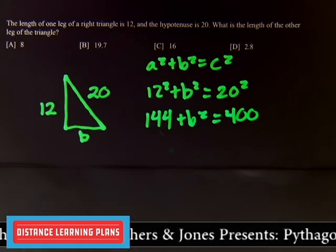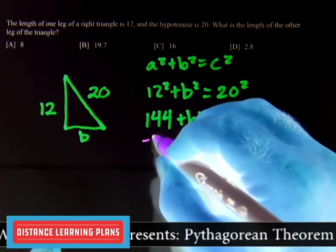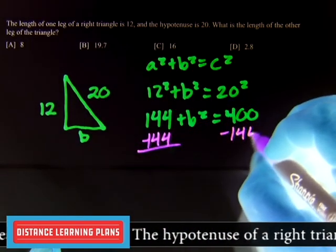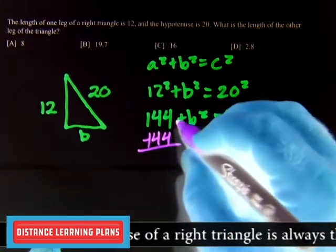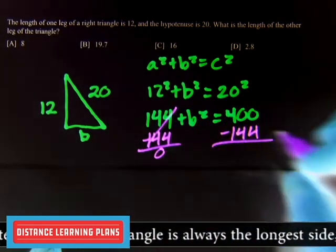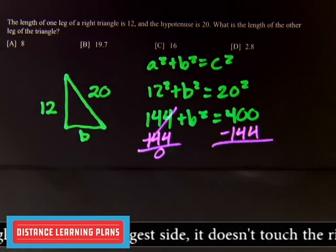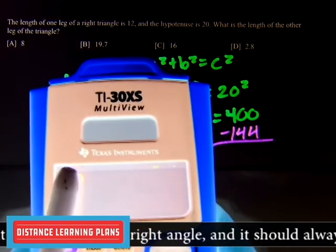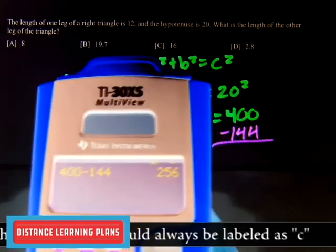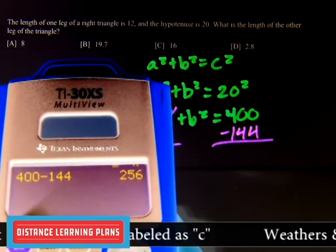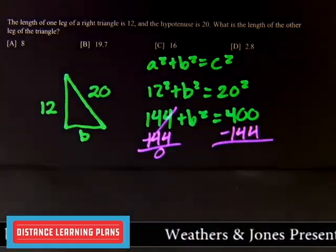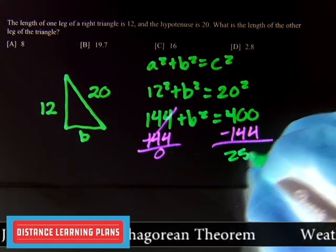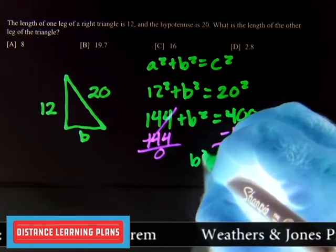Now, again, the simple algebra rule, whatever you do to one side, you have to do to the other, so we need to subtract 144 from both sides, cancels out, 400 minus 144. Again, this is why we have calculators, 400 minus 144, we get 256. So B squared equals 256.